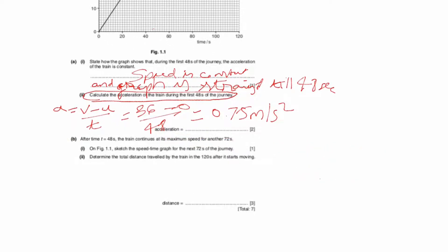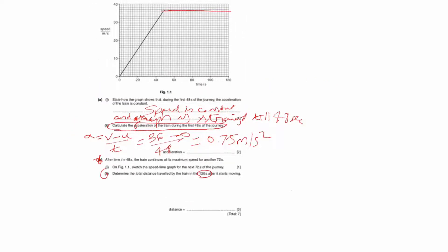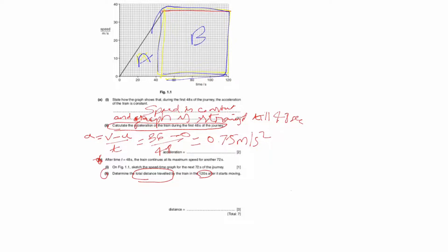Now for part B2: determine the total distance traveled by the train in 120 seconds after it starts moving. The total distance traveled is the area under the speed-time graph. We need to find the whole area under the graph. Two geometrical figures are formed: first, a triangle, and second, a rectangle. This is figure A and this is figure B.